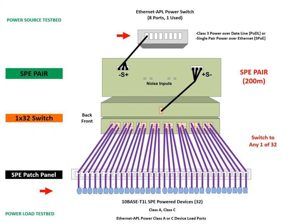The signal from the Ethernet APL power switch port 1 travels through the 4950 emulator, which is set to 200 meters. It then travels to the back of the 600 switch and can be switched to any one of 32 powered devices. Here we see it being switched first to channel 1 and powered device 1, and then to channel 13 and powered device 13.